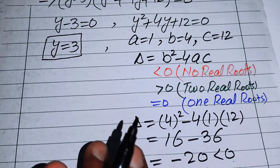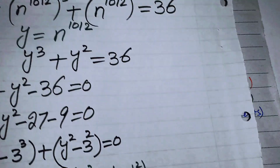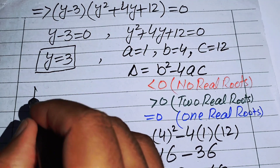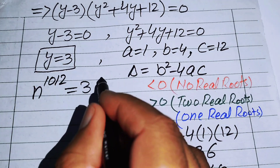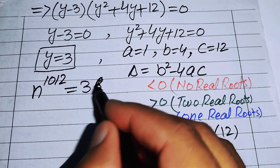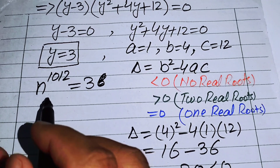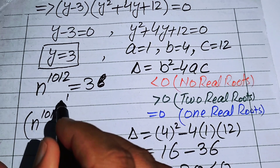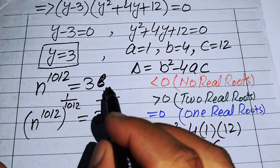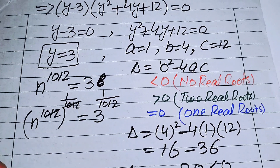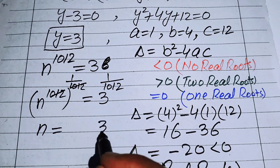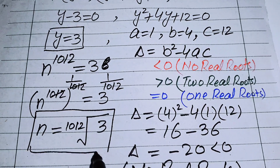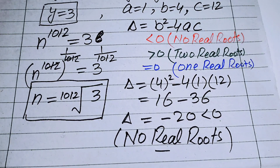We proceed with y = 3 only. Back-substituting y = n^1012, we get n^1012 = 3. Raising both sides to the power of 1/1012, we get n = 3^(1/1012). This is our final answer. Thank you so much for watching this video — please subscribe to my channel for more exciting videos.